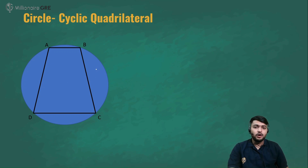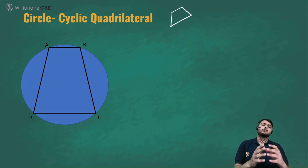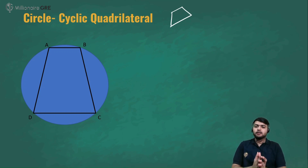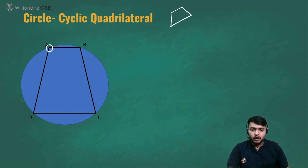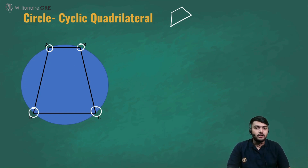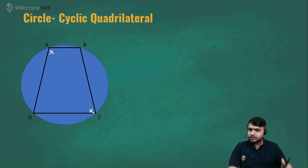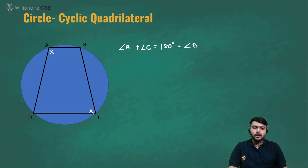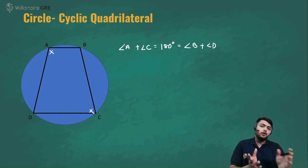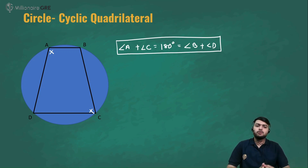The next concept is the cyclic quadrilateral. A quadrilateral is a four-sided figure. A cyclic quadrilateral is one whose all four vertices lie on a circle. Here ABCD is a cyclic quadrilateral. The one property we must know is that the sum of opposite angles equals 180°. So angle A + angle C = 180°, which also equals angle B + angle D, since B and D are also opposite angles.